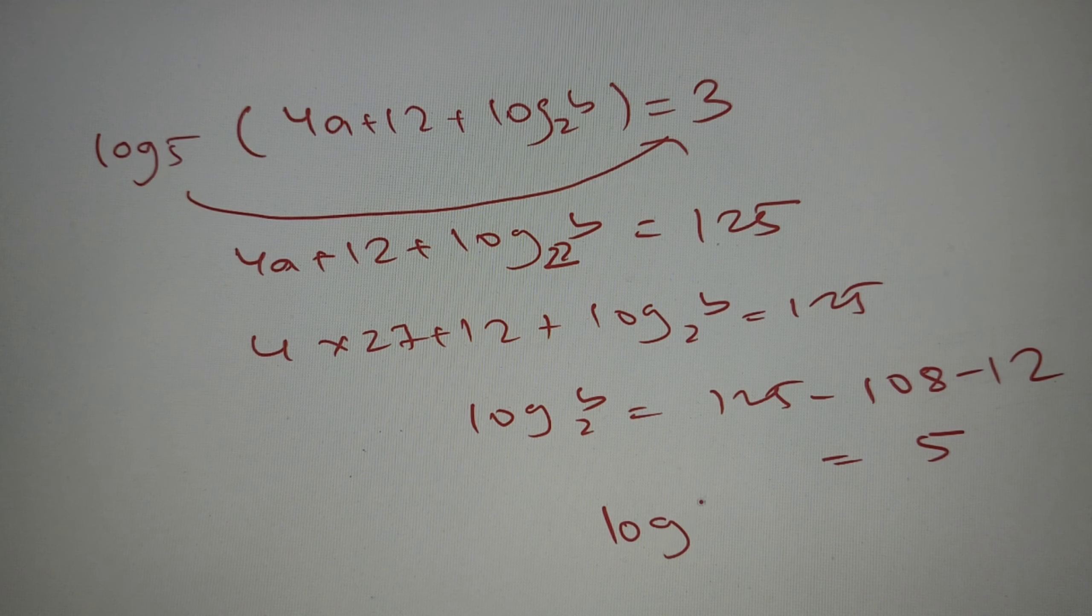We have got the value of log base 2 of b as 5. So this 2 will go underneath 5. So we have got the value of b as 2 raised to the power 5, which is equal to 32.